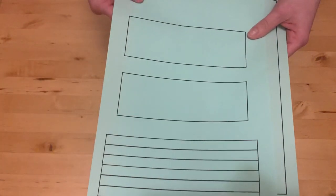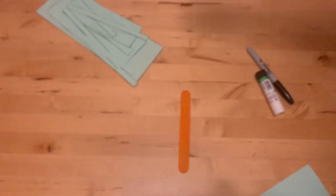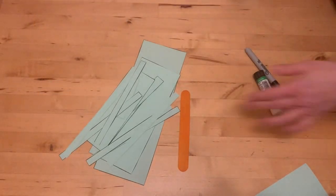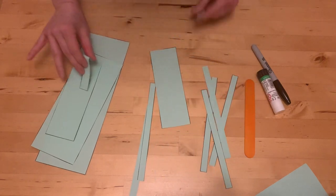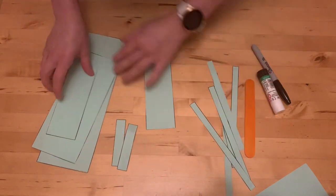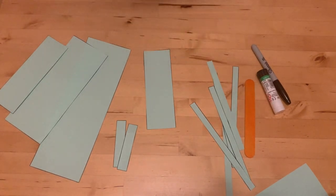First I'm going to cut my template out. Now I have my six legs, my two antenna and my other body parts here.